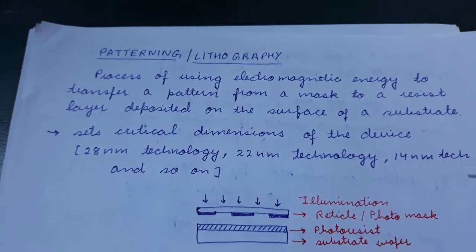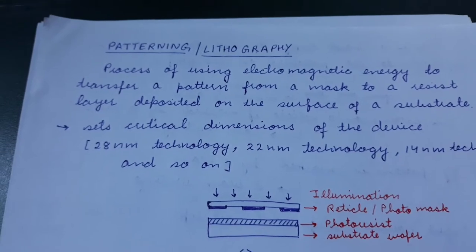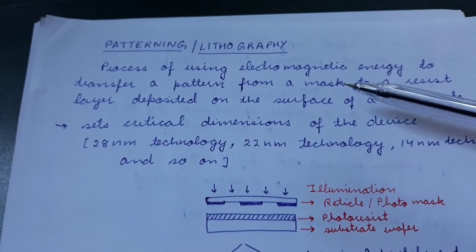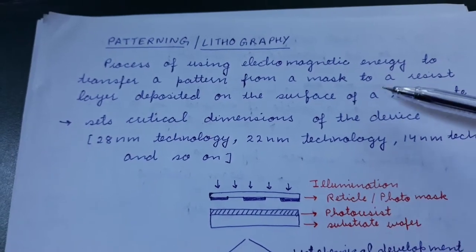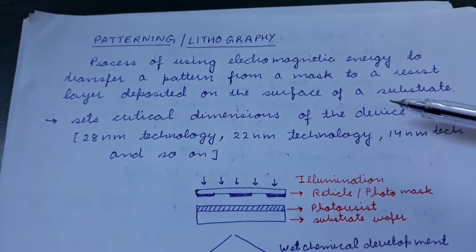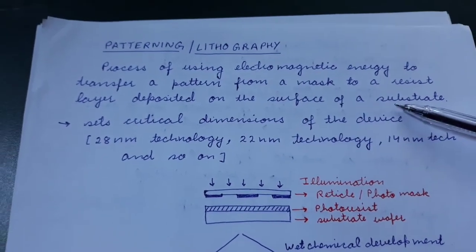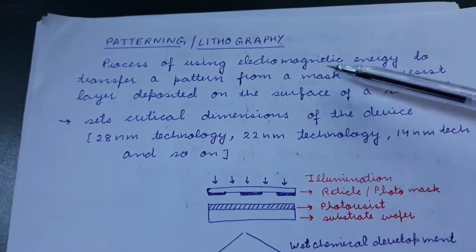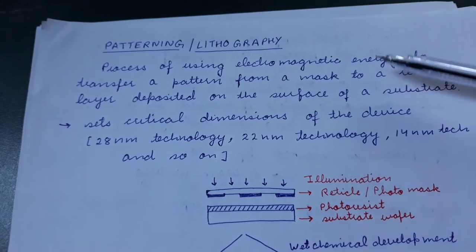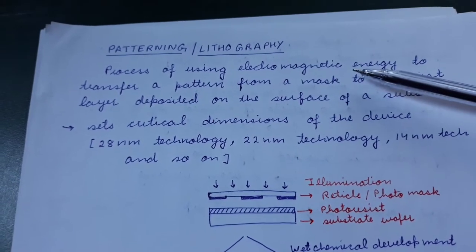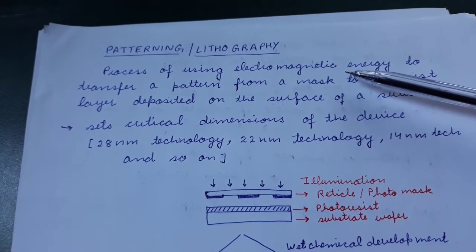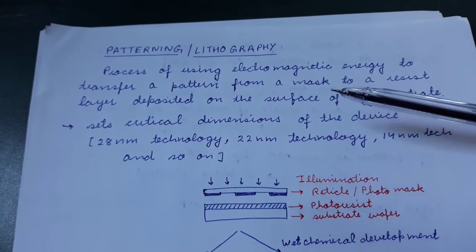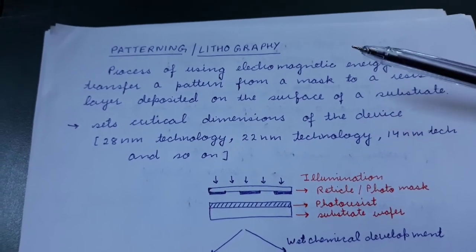Today we are going to study about lithography. Lithography is a process of using electromagnetic energy to transfer a pattern from a mask to a resist layer deposited on the surface of a substrate. This is true for photolithography where we are using electromagnetic energy, but if we are using some other form of energy, for example electron beam or ion beam, then it is called ion beam lithography or e-beam lithography.